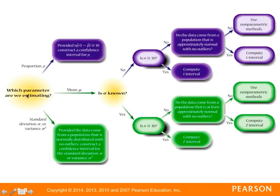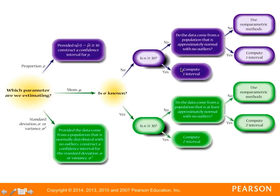The first question you want to ask yourself is: which parameter are we estimating? If you're estimating a proportion p, provided that n times p-hat times 1 minus p-hat is at least 10, you can construct a confidence interval for p. If you're estimating mu, you need to know if sigma is known. If sigma is known and n is greater than or equal to 30, you compute your z interval. If not, check if data comes from an approximately normal population with no outliers — if so, compute the z interval. If sigma is not known and n is at least 30, compute your t interval; otherwise check for approximate normality and compute the t interval if met.